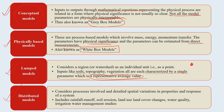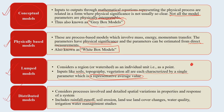Distributed models consider the processes involved and also account for spatial variation - spatial variations are critically important in distributed models. Input parameters include rainfall runoff, soil erosion, land use, land cover changes, water quality, irrigation, and water management studies. Most of the models discussed capture the phenomena and interrelationships happening in nature with regard to natural resources, which is why we are discussing them in this lecture.